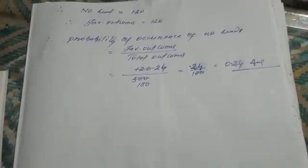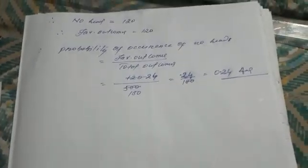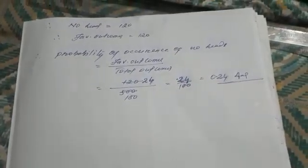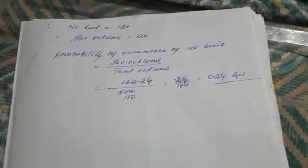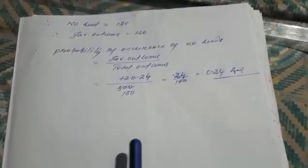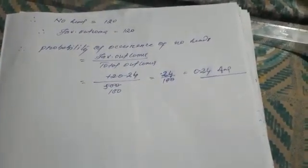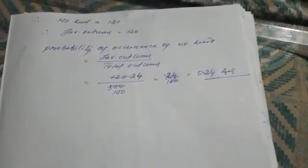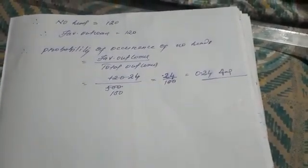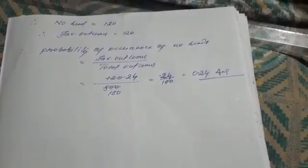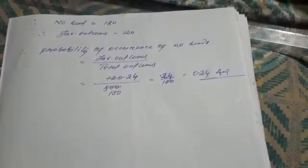I hope all of you have understood. I'll send you this photo as well — first watch and listen to the video carefully and try to understand. The only formula in this lesson is: probability = favorable outcome divided by total outcome. That's all — after this I'll go to the last question. Thank you.